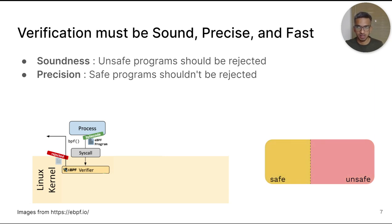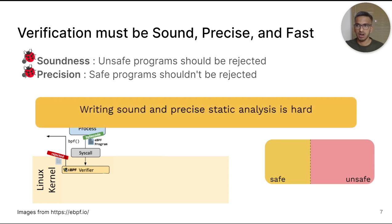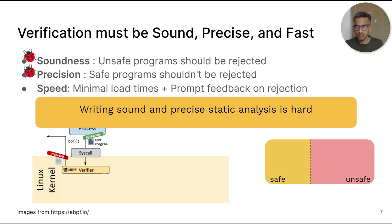But writing correct static analysis is hard. In 2021 alone, there have been at least seven vulnerabilities in the CVE database related to bugs in the static analysis in the verifier. Additionally, verification should also be fast because it's a mandatory step in the process of loading the program.